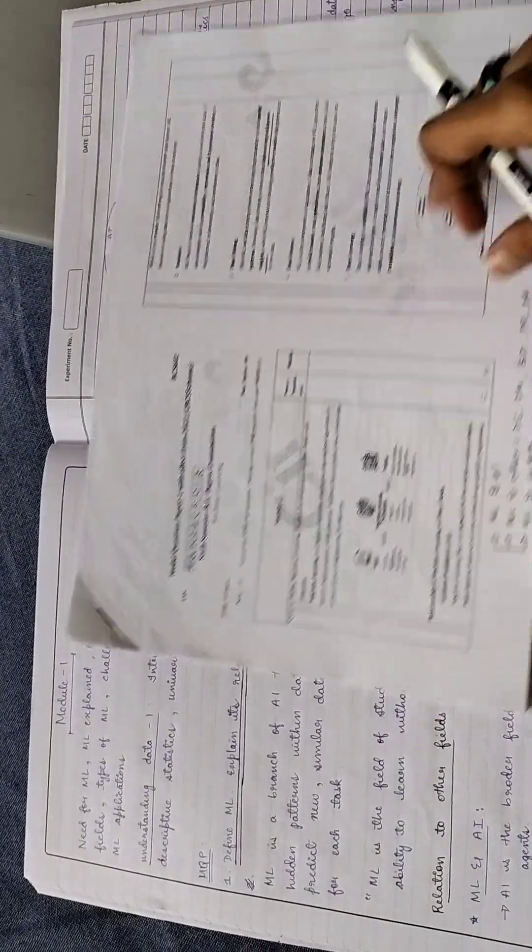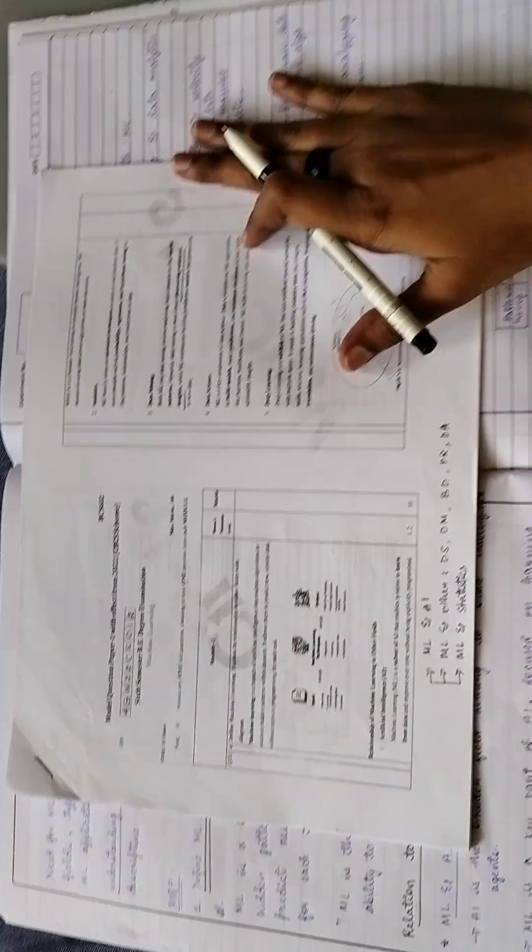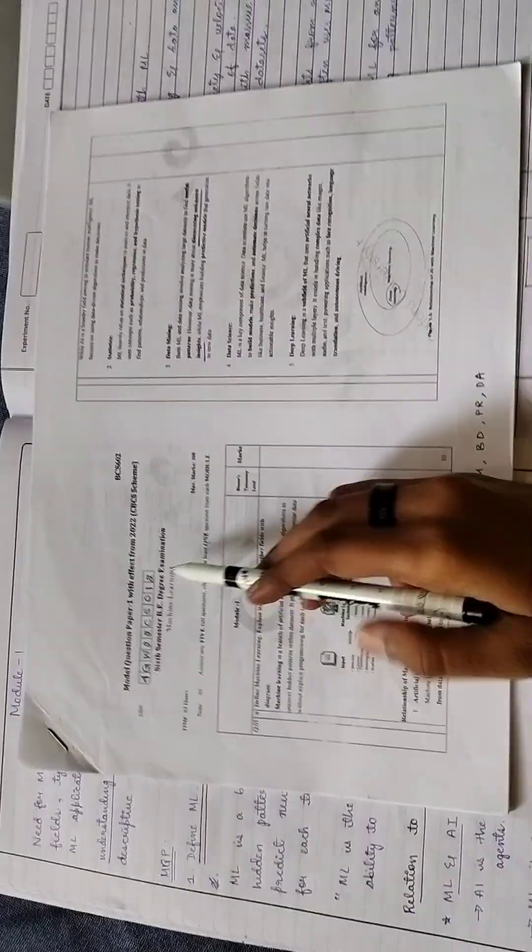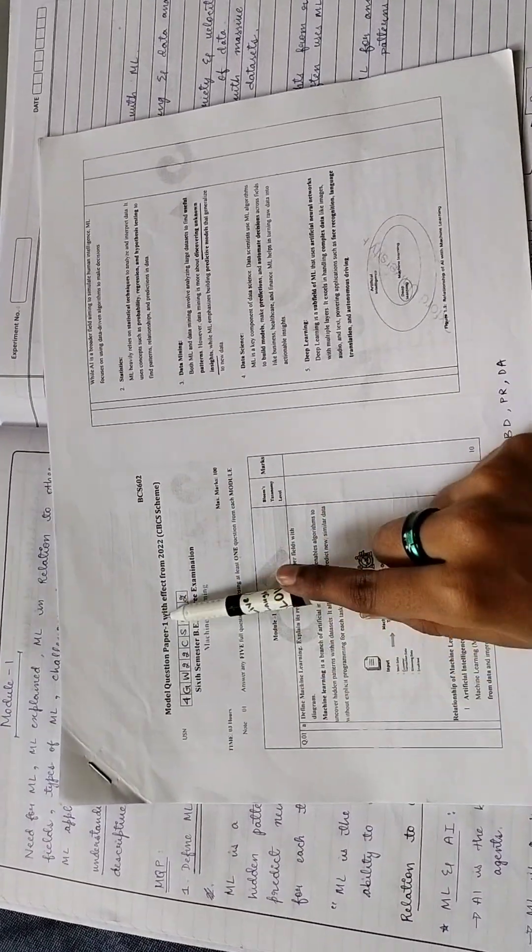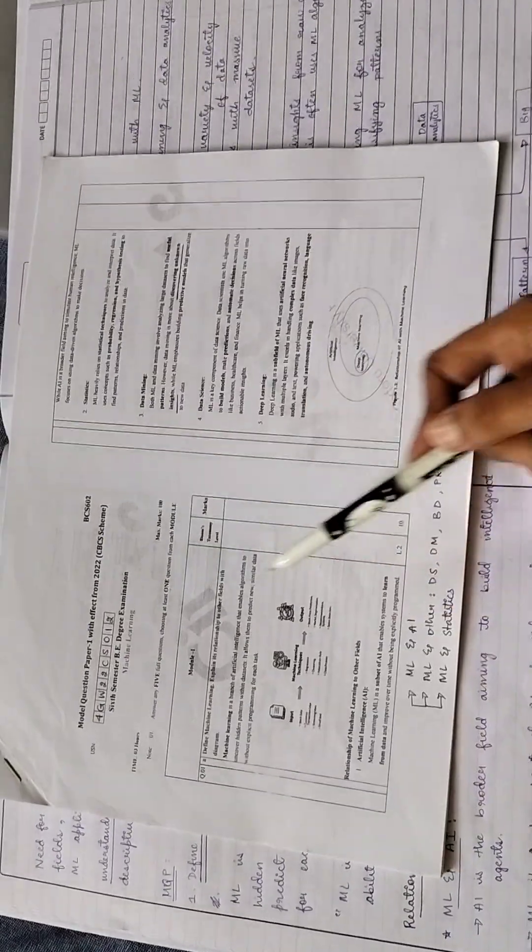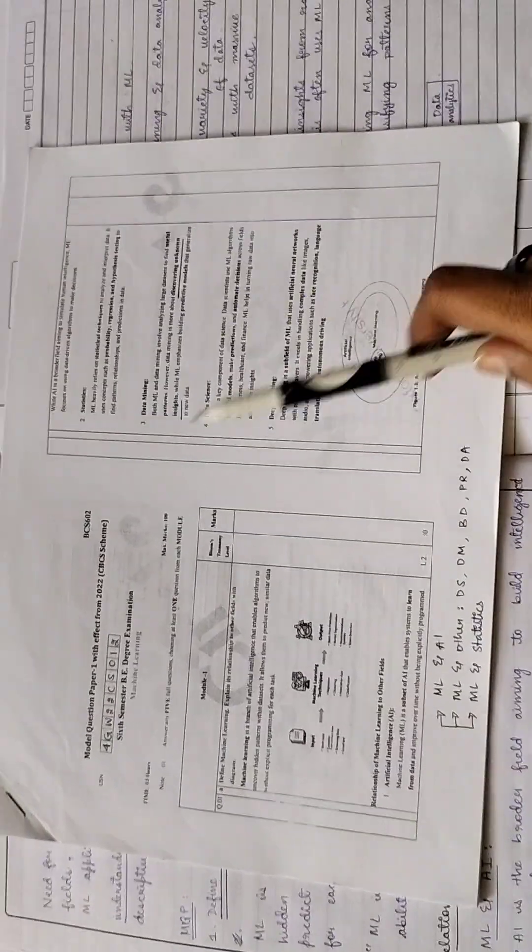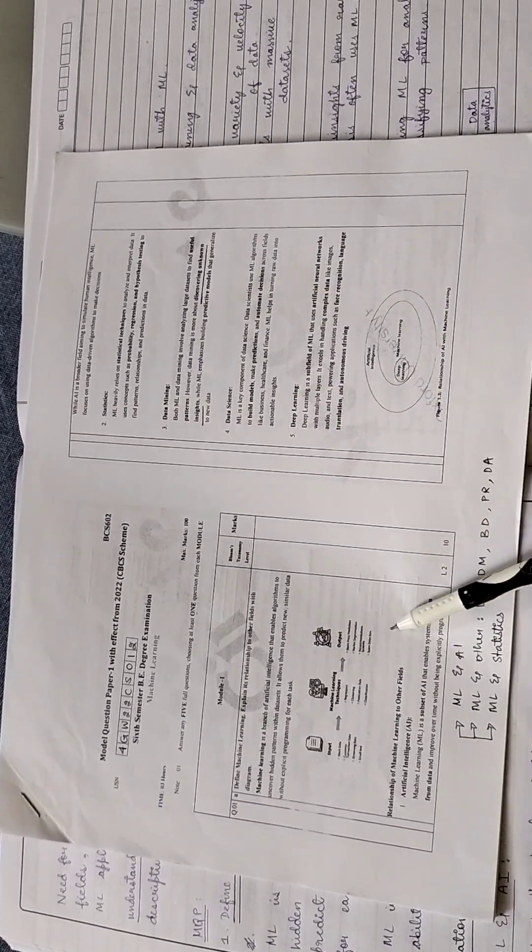But I'm not sure to what extent I can write. But let's get to the main point. Get the machine learning model paper question paper one printout with solutions. It has all the questions with the solutions, and I'll tell you for which questions you have to learn these answers and for which questions you have to learn textbook answers.